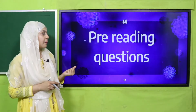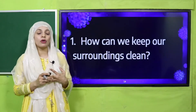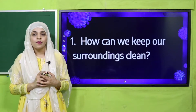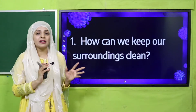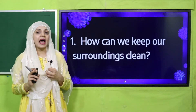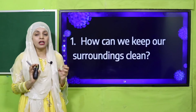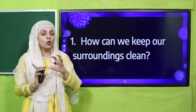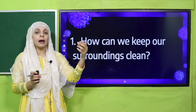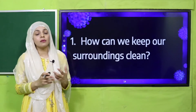Some pre-reading questions: How can we keep our surroundings clean? By throwing garbage into dustbins, washing our hands, and sanitizing the things we most often touch — like mobile phones, doorknobs, and cupboard handles. Unko ap saaf kare, taaka germs ka spread kam se kam ho.